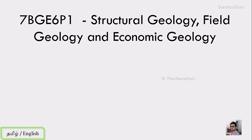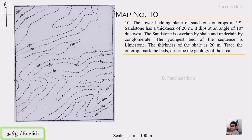Good morning students. We are in our practical lecture number seven. Today we'll try to solve map number 10. The question is: the lower bedding plane of a sandstone outcrops at point P. The sandstone has a thickness of 20 meters and dips at an angle of 10 degrees due west. The sandstone is overlain by shale and underlain by conglomerate. The youngest bed of the sequence is the limestone. The thickness of the shale is 20 meters. Trace the outcrop, mark the beds, and describe the geology of the area.